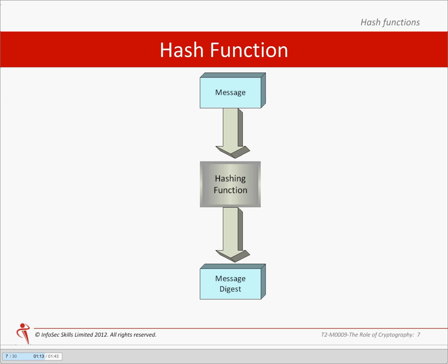There are multiple versions of SHA. The original SHA algorithm is referred to as SHA1 and has a digest length of 160 bits. SHA2 was published in 2001 and consists of two hash functions with digests that are 256 or 512 bits in length, normally referred to as SHA256 and SHA512.